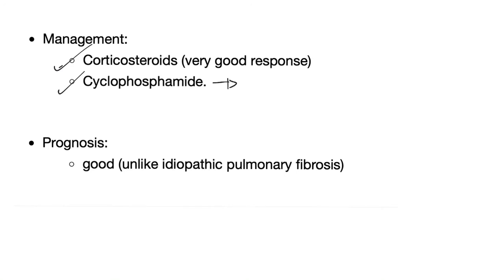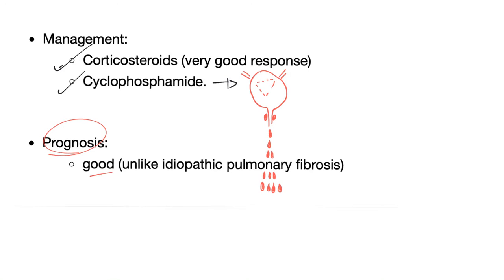Management is by immunosuppressants such as corticosteroids and cyclophosphamide. A famous yet horrible side effect of cyclophosphamide is hemorrhagic cystitis. Prognosis for cryptogenic organizing pneumonia is good, unlike idiopathic pulmonary fibrosis, which has a poor prognosis.